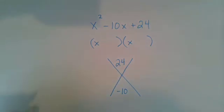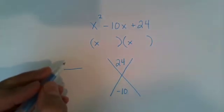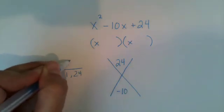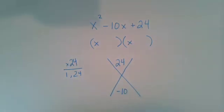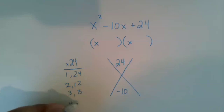And what we're asking ourselves to fill in these two terms is what multiplies to the top and adds to the bottom. And it can sometimes be helpful to do a little factor list over here. So what are things that multiply to 24? Well, one and 24, two and 12, three and eight, four and six. That pretty much covers it.